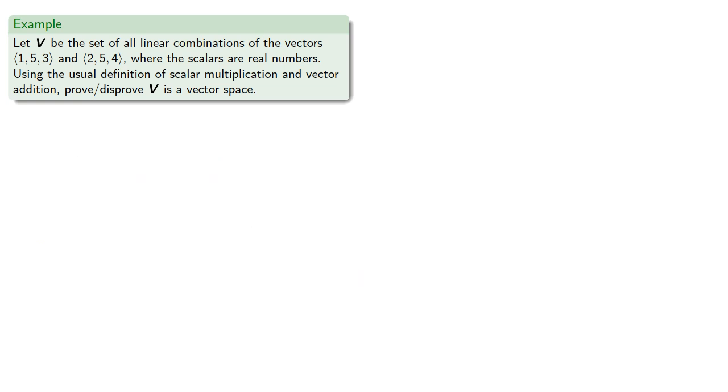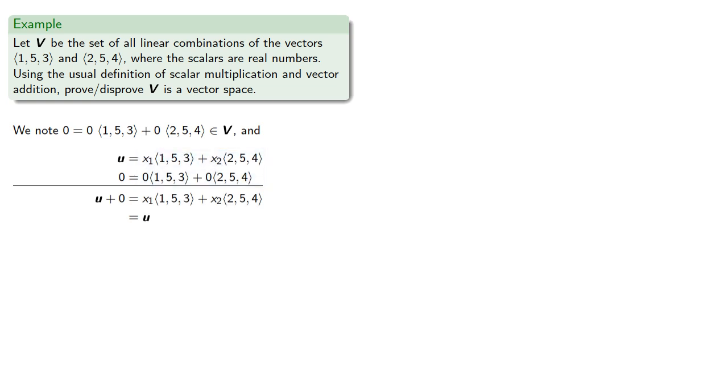We need to find a zero vector. Remember, our vectors in V are linear combinations of (1, 5, 3) and (2, 5, 4). So we'd like something that is x₁(1, 5, 3) + x₂(2, 5, 4) that can act as our zero. The right-hand side is a standard vector expression, so let's try zero of each. So u is some linear combination, zero is the linear combination with zero coefficients. u + 0, I can add the right-hand side, which is the same thing as what I started with. So V has a zero vector.